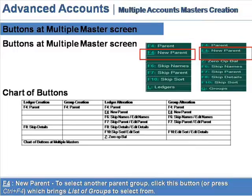F4 New Parent. To select another parent group, click this button or press Ctrl+F4, which brings up a list of groups to select from.